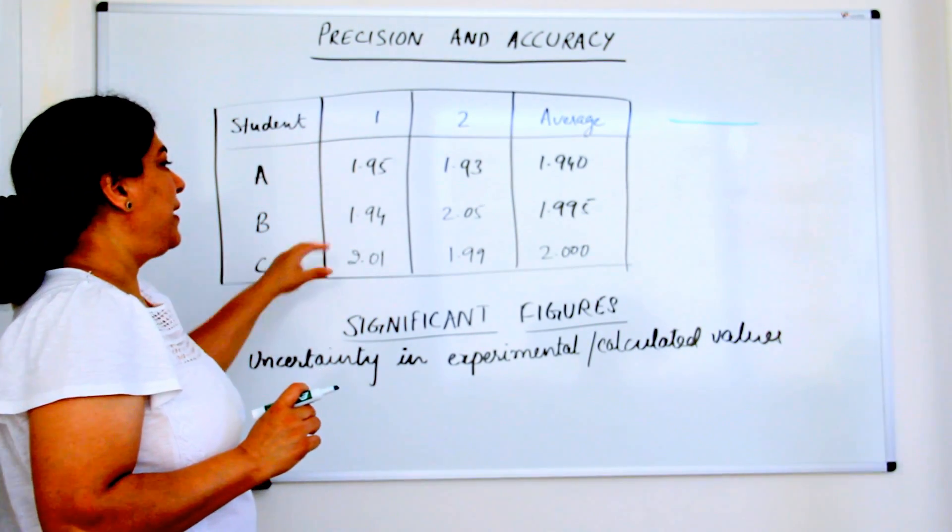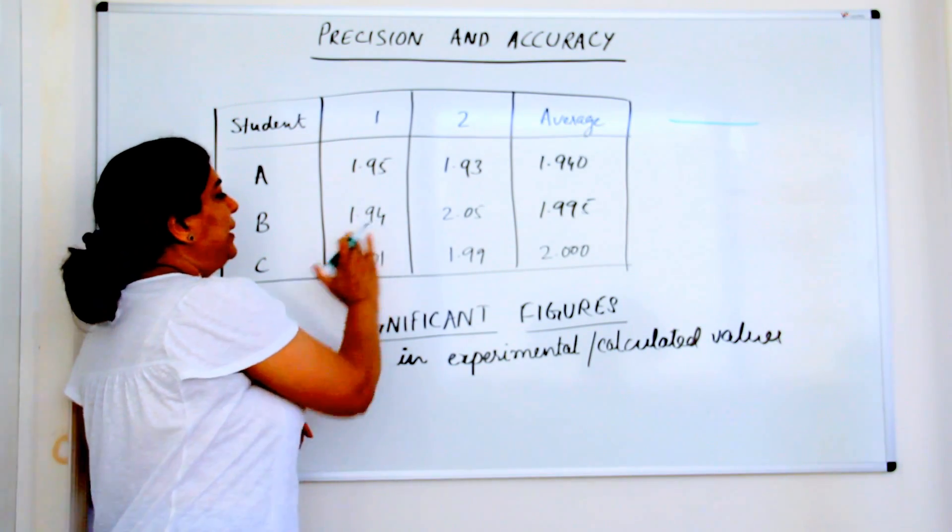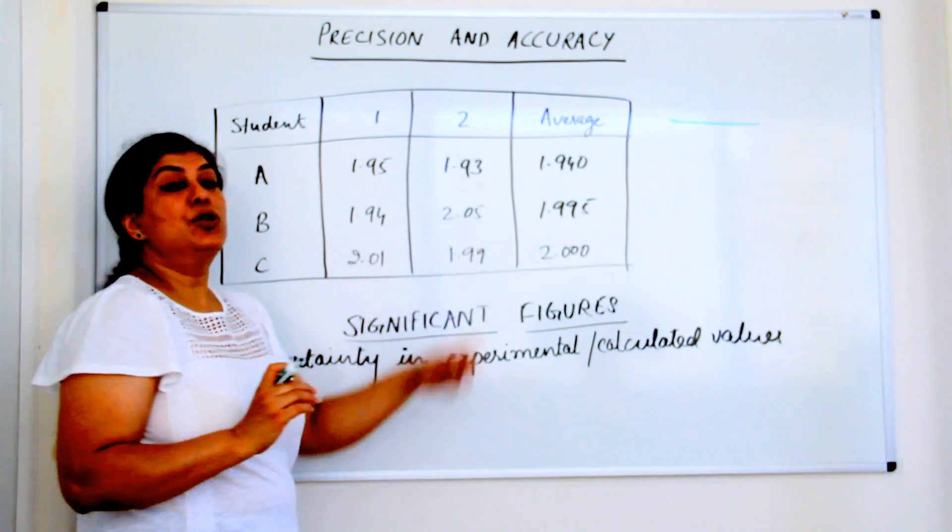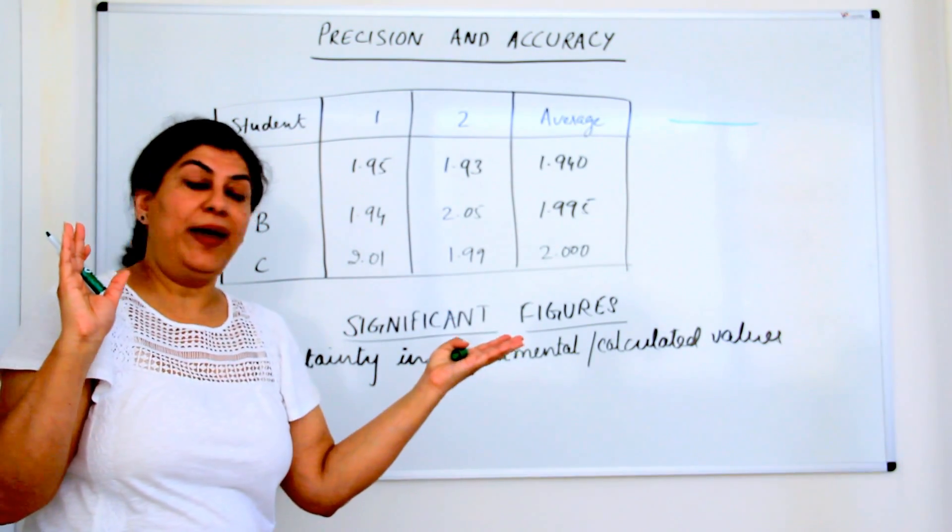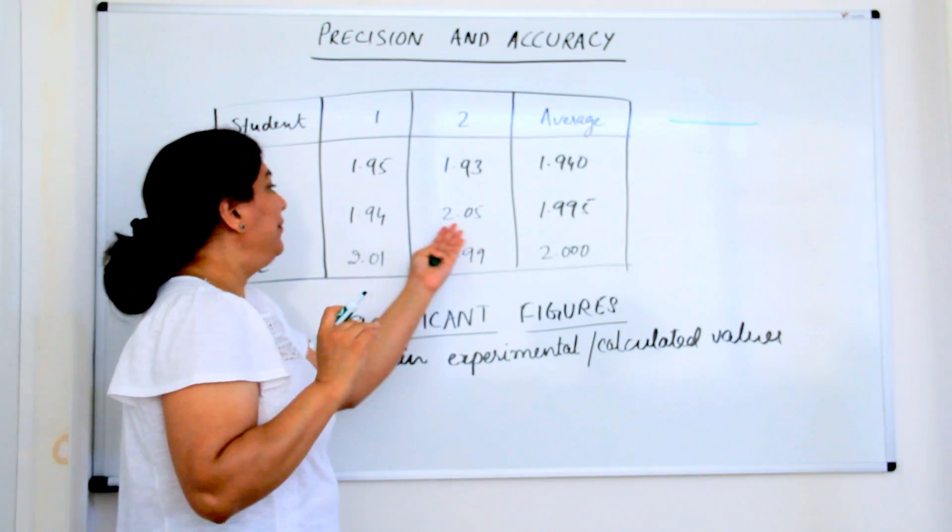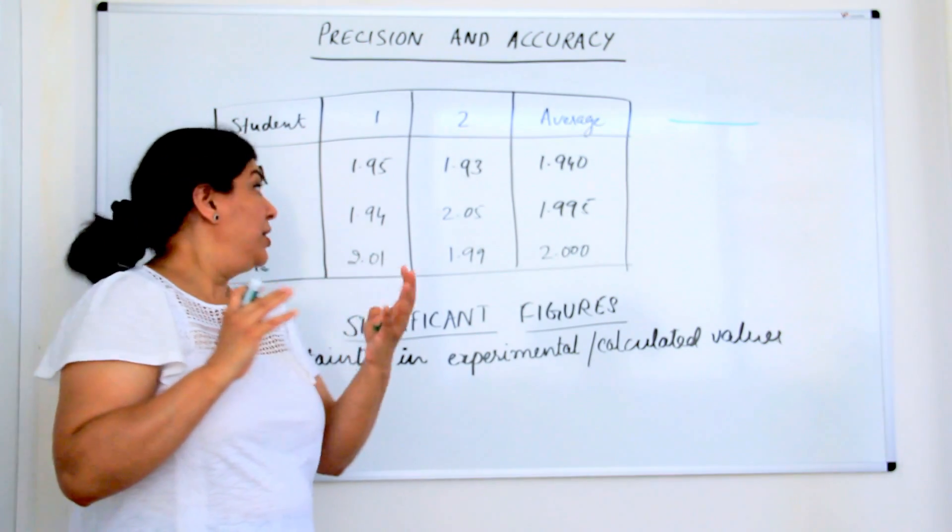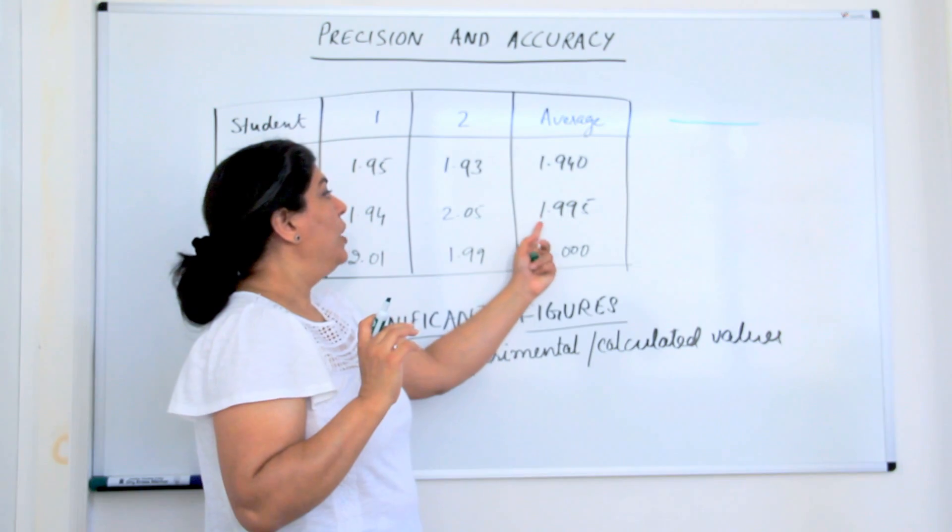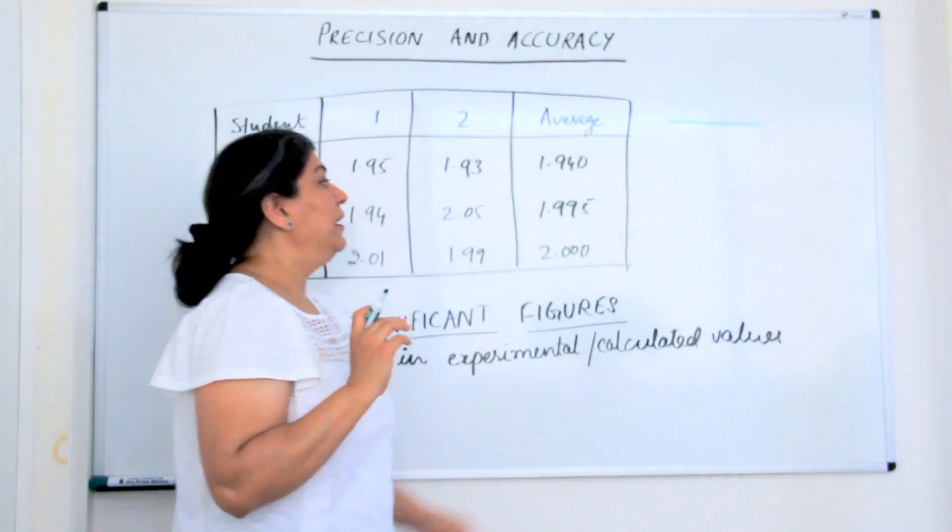Student B carries out the measurements. The first time he gets 1.94 and the second time he gets 2.05. Way beyond. 1.94 and 2.05, the difference is so large that they are not precise. The average reading comes to 1.995.